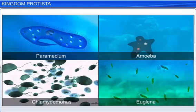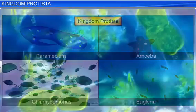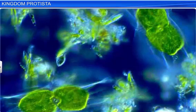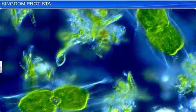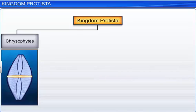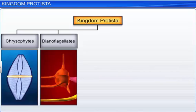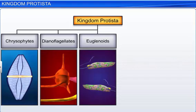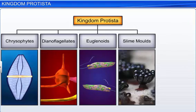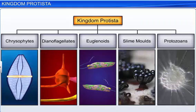All unicellular eukaryotes come under Kingdom Protista. Members of the Kingdom Protista are primarily aquatic. Chrysophites, Dinoflagellates, Euglenoids, Slime Molds, and Protozoans are few categories of Protists.